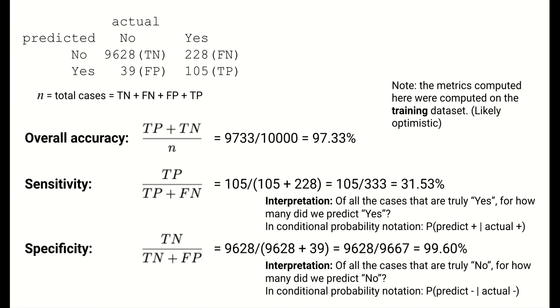Finally, we have specificity. Specificity is another class-specific accuracy measure that gives the percentage of true noes that are predicted to be no. Here, it's the percentage of actual non-defaulters who we predict to not default. There were 9,667 people who did not default, and we detected 9,628 of them, or 99.6%. Specificity can also be written in conditional probability notation. The probability of predicting a negative among those who are actually negative.